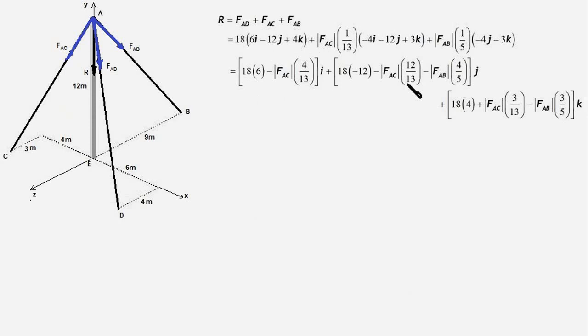the j components together, and the k components together. So if R is R_x i plus R_y j plus R_z k, then this is R_x, this is R_y, and this is R_z.